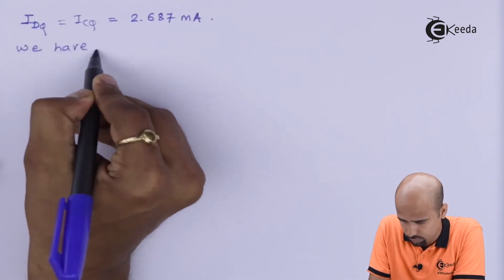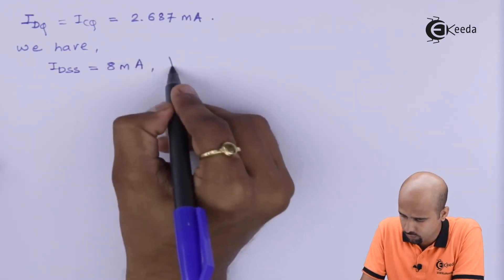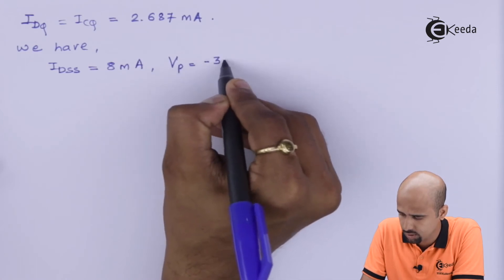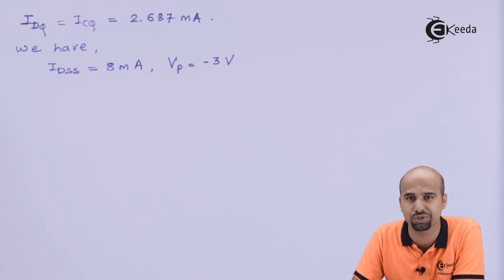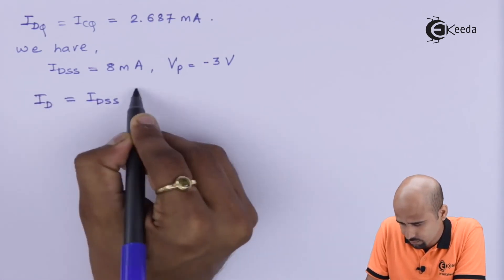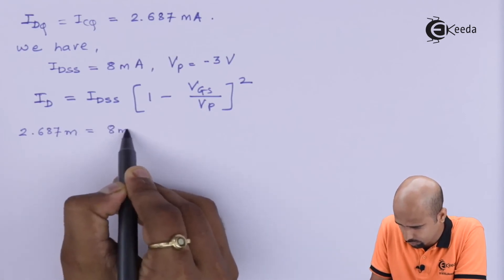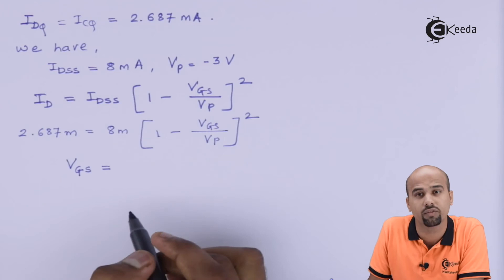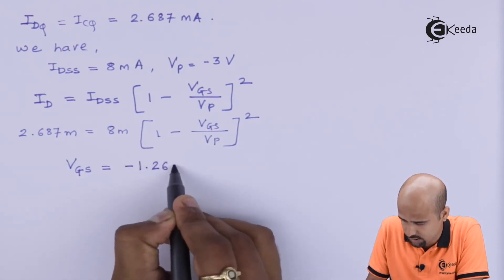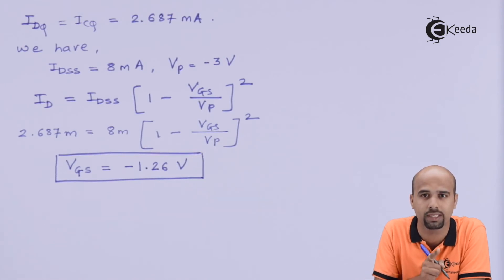We already have, what do we have? We have IDSS is equal to 8 milliampere, right? Vp is equal to minus 3 volts. Do we have the equation of the current? Shockley's equation in JFET? Yes. You can use that because ID is known to us. IDSS is known to us. Vp is known to us. You can just have to calculate the value of VGS. So, just do one thing, put the value and get the answer of VGS. Whatever VGS we are getting is minus of 1.26 volts. If your answer of VGS is well below the value of Vp, then and only then it is possible that you are in a correct path.